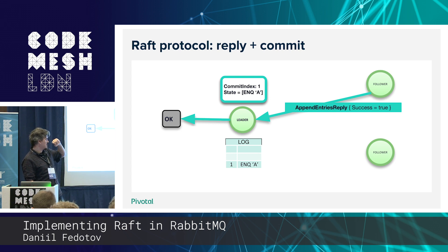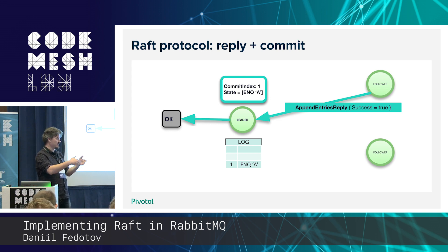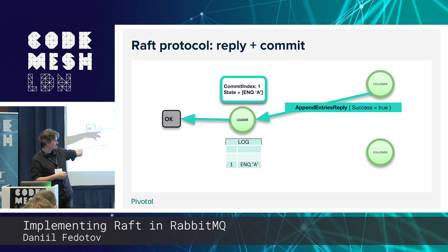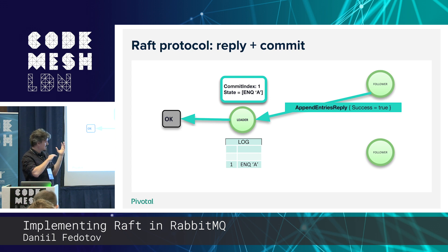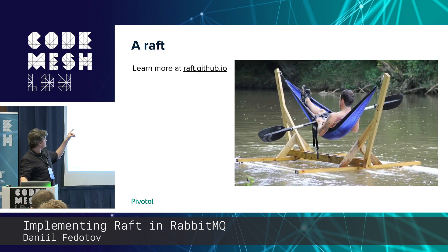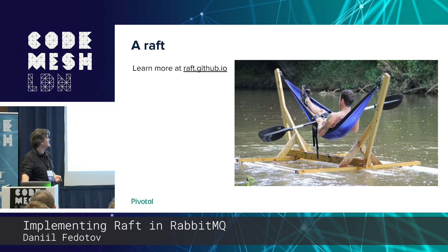When an enqueue command comes into the Raft system, the leader adds it to its own log and sends it to followers. When a majority of nodes reply successfully, the leader sets a commit index — meaning that message in the log is persistent, it's not going to be removed. After that it applies the message to the state machine, which in our case means the message is enqueued. Follower two not having responded yet is fine — leader and follower one are enough because it's a majority out of three. You can read more at raft.github.io — there are beautiful pictures and gifs.